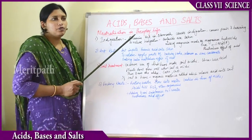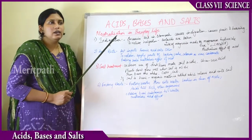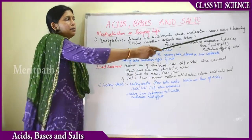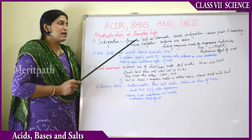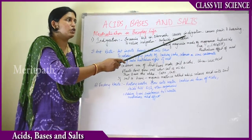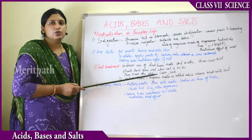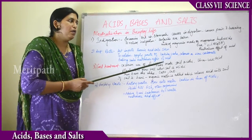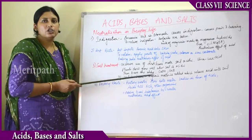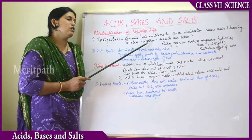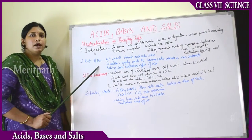An everyday example of neutralization: if you eat spicy or oily food, you sometimes get indigestion — pain and burning in your stomach. The acid in your stomach is hydrochloric acid. Excessive secretion of HCl causes indigestion. To relieve it, you take an antacid tablet like Digene or Eno, which contain milk of magnesia — magnesium hydroxide, a base — to neutralize the excess acid.